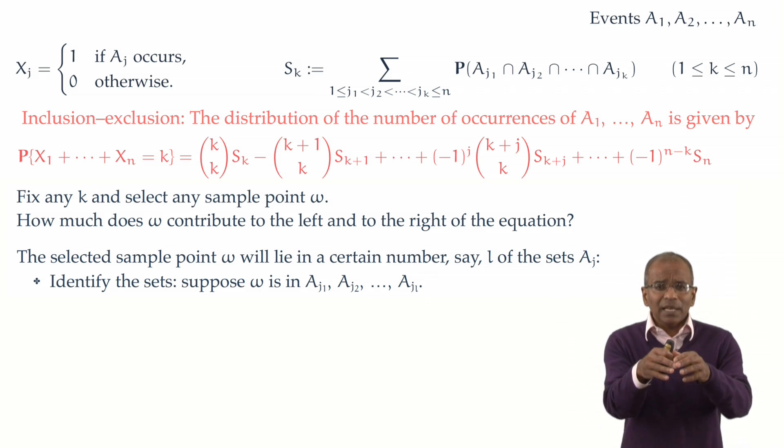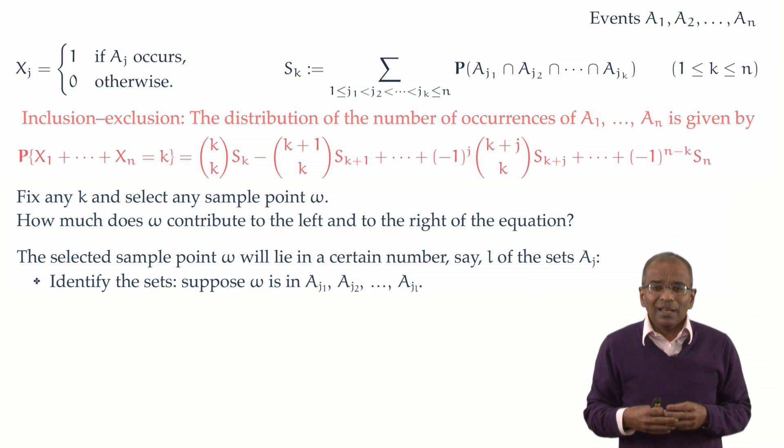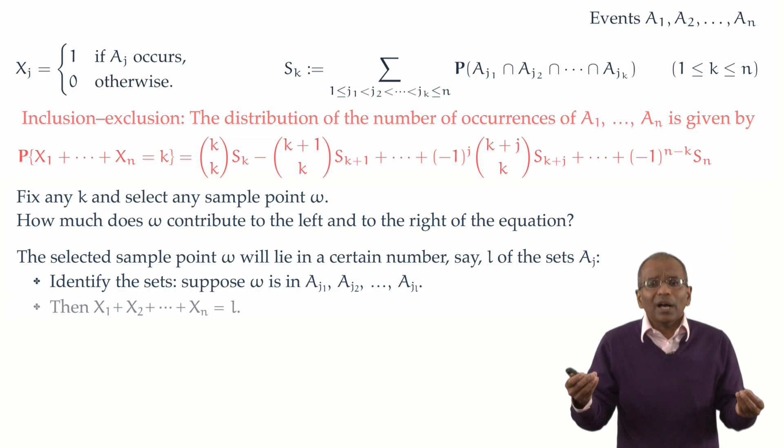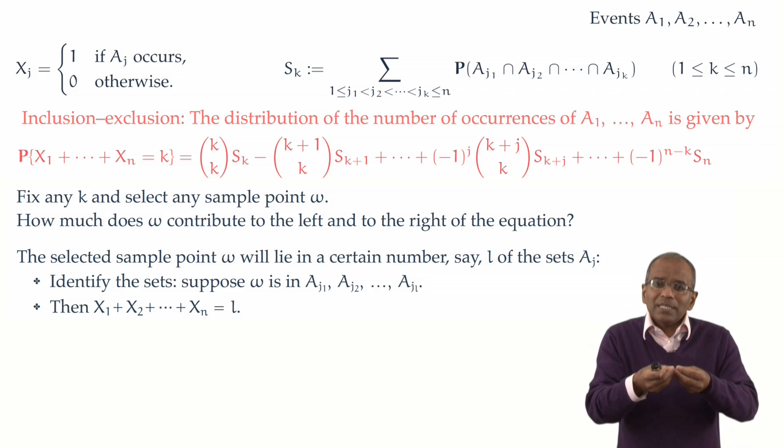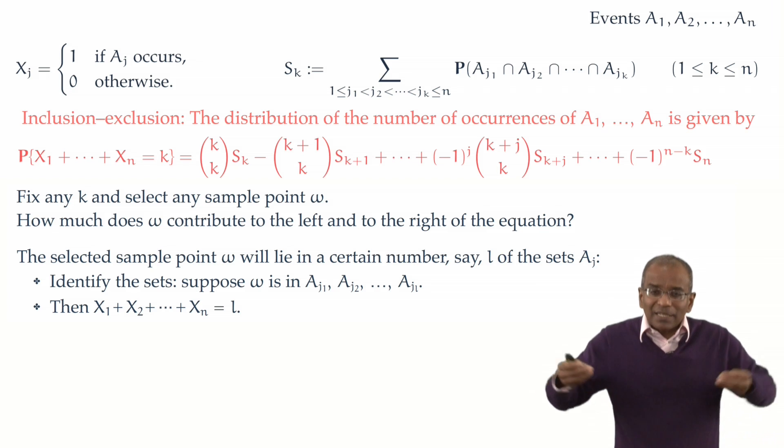Alright, now we've identified which of the events omega triggers. Which of the events this particular outcome is favorable for? The moment you tell me that the particular sample point omega that we have selected lies in these L events, then we know that the number of events that occur is exactly L.